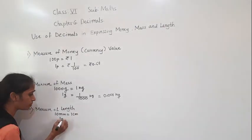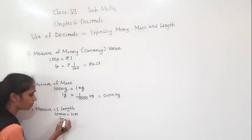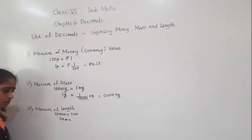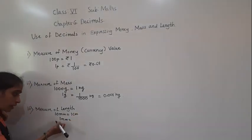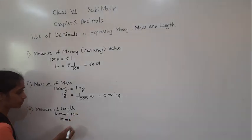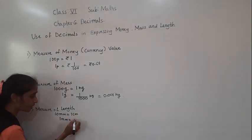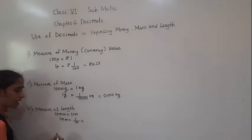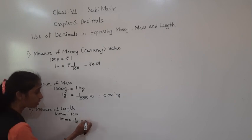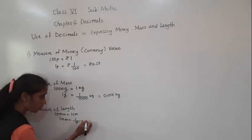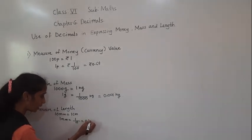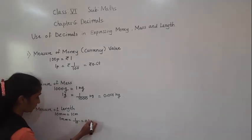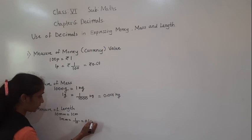So 1 mm is equal to 1 upon 10 cm. When we divide 1 by 10, shifting the decimal point before 1 digit, we get 0.1 centimeter.